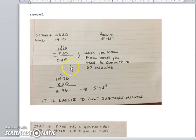So when you borrow here you get 13 hours, you add 60 to the 15 and you end up with 75 minutes. If you subtract you end up with your 5 hours 45 minutes, which is what our result was supposed to be.